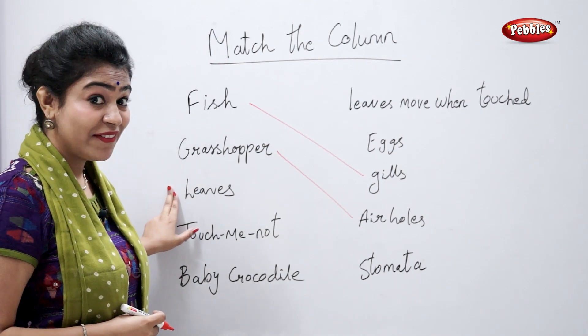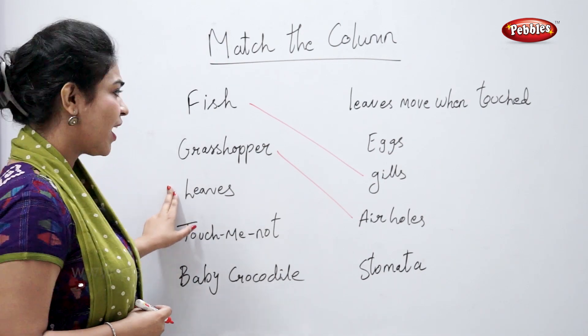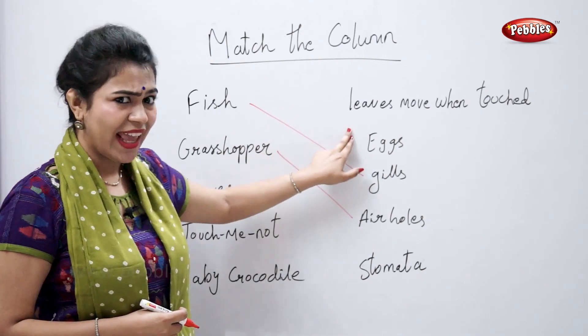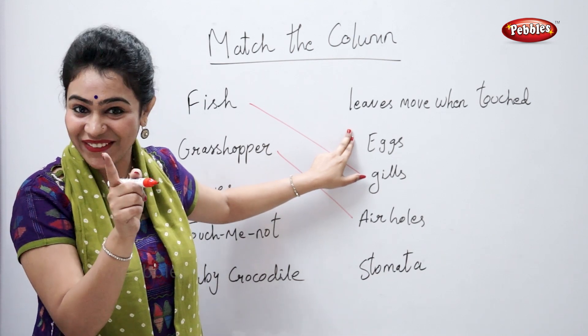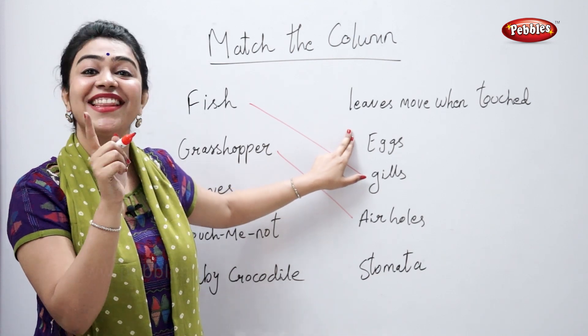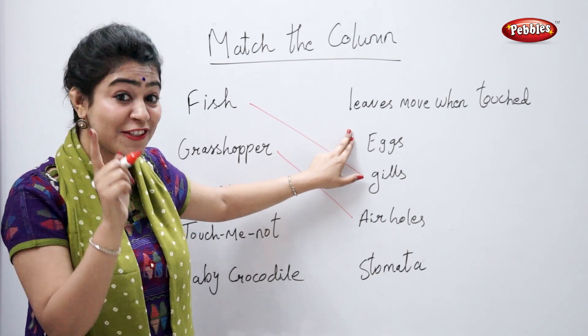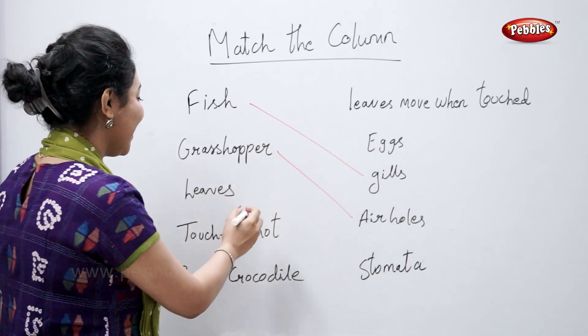What does a leaf have? Not eggs — they have stomata.